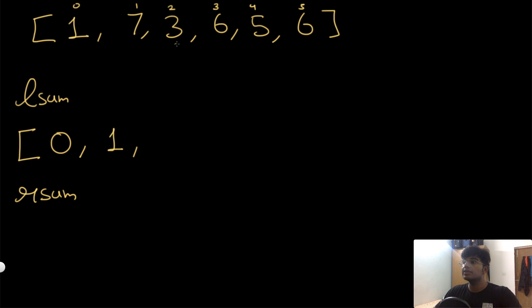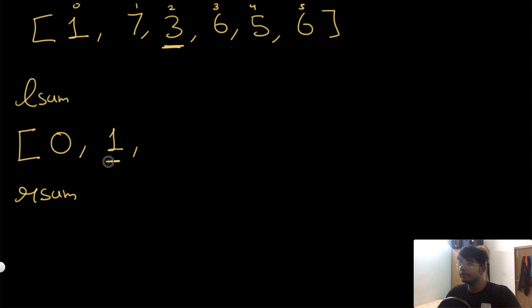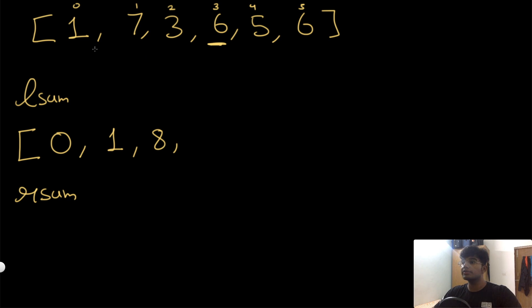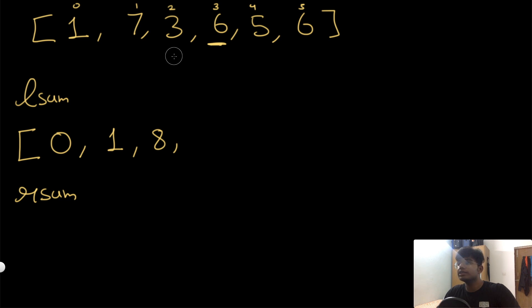At the second index, the elements to the left are seven and one. Here we can apply a small trick: instead of summing all previous elements again, we just take the previous cumulative sum and add the current number. So that's one plus seven which is eight. At the third index, instead of doing one plus seven plus three separately, we just take the previous cumulative sum eight and add three, giving us eleven — one addition instead of three repeated additions.